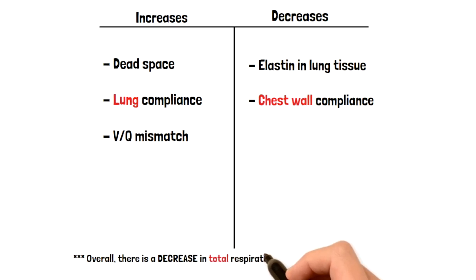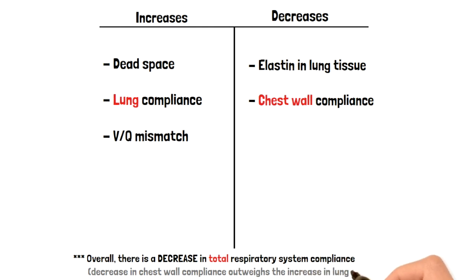Now finally, I want to make a key point here. There's a total decrease in the total respiratory system compliance, and this is because the decrease seen in chest wall compliance overall outweighs the increase in lung compliance. Those things acting together will overall decrease total respiratory system compliance.